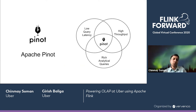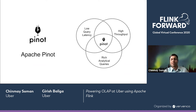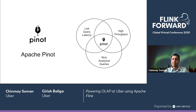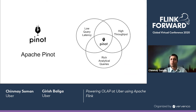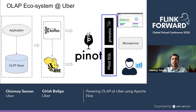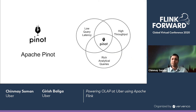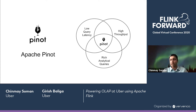Apache Pinot is a distributed columnar OLAP store which originated at LinkedIn, and it adopts the classic Lambda architecture. It's able to consume from both Kafka and Hive and present a unified view to users. Both flows are distinct — on the real-time side it consumes event by event, and on the Hive side it generates segments in bulk. At Uber, we adopted Pinot primarily because of its ability to serve high-throughput queries in a very low-latency manner at millisecond granularity.